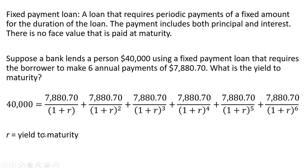So R is the yield to maturity. In other words, what interest rate — what discount rate — would make all of these fixed payments equal the loan amount?